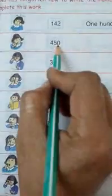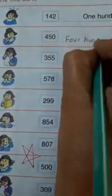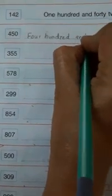Now first of all we will read this number and the number is 450. Now we will write here 400 and 50. Now 355.